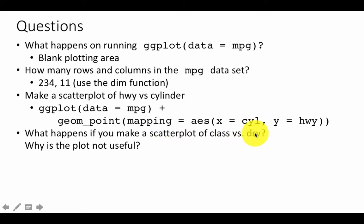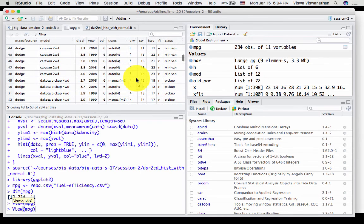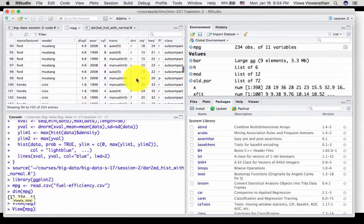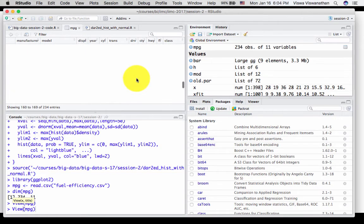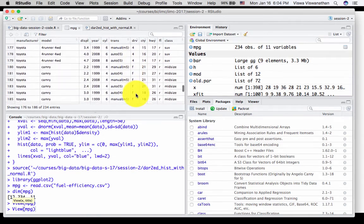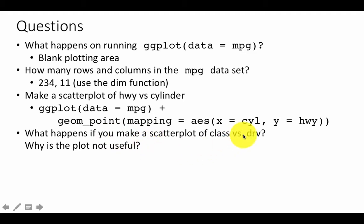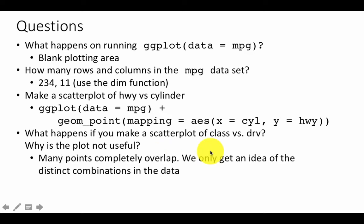So if you make a scatter plot of class versus drive, and drive is a variable that contains information about four-wheel drive, front-wheel drive, rear-wheel drive. Four, F, and R. There are some rear-wheel drives, believe me, if you scroll down far enough, you'll see some rear-wheel drive cars. So those are the different values. So if you make a scatter plot of class versus drive, you will see the chart, and why is the plot not very useful? Okay, so take a look at it. Then at some later point, we'll discuss this.